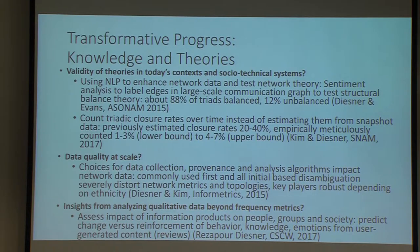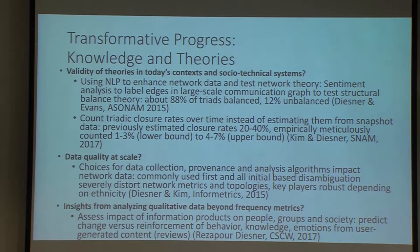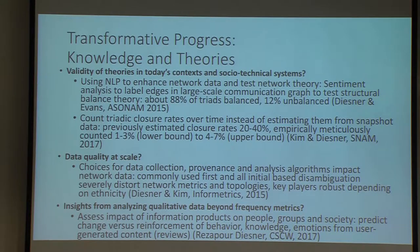Another example is triad-closure theory, commonly used in social network analysis, where statistical models estimate the upper and lower bound of triad closure in citation graphs, collaboration graphs, and co-authorship graphs to be somewhere between 20 and 40%. What we did was take long-term big data from a variety of communities and simply count whether closure actually happens, finding a lower bound of 1 to 3% and an upper bound of 4 to 7% — much less, but probably more realistic.